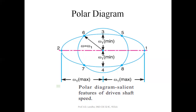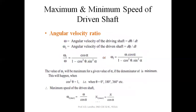There is one condition where the driving and driven forks have the same speed. These points are five, six, seven, and eight, where the speed of the driving fork AB equals the speed of the driven fork CD.